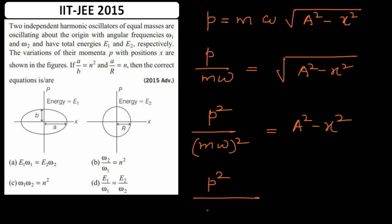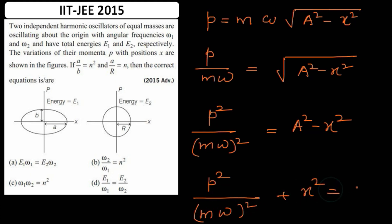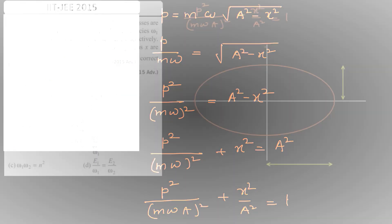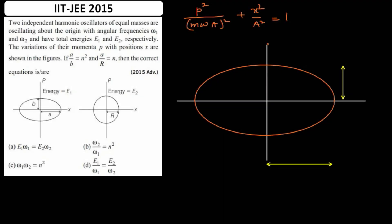Rearranging: p²/(mω)² + x² = A². Now dividing both sides by A², we get p²/(mωA)² + x²/A² = 1, which is the standard equation of an ellipse. So the phase space diagram is indeed an ellipse, with the p-axis vertical and the x-axis horizontal.